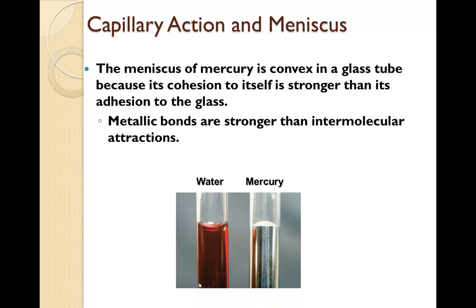The meniscus of mercury is convex in a glass tube because the cohesion to itself, the mercury atoms themselves, is stronger than the attraction or the adhesion to the glass. In other words, metallic bonds are stronger than the intermolecular attraction to the glass.